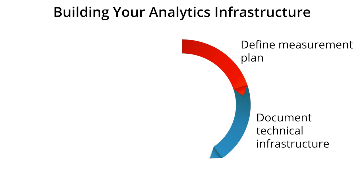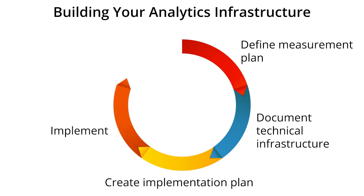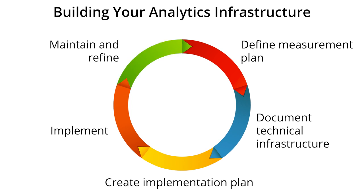After defining your business needs and documenting the technical environment of your business, the next step is creating an implementation plan that is specific to the analytics tool that you're using. For Google Analytics, this means defining the code snippets and specific product features that you'll need in order to track the data defined in your measurement plan. Once the implementation plan is designed, the next step is to have the web development team or the mobile team actually implement the tracking recommendations that you've made. This process isn't complete once the implementation stage is over.